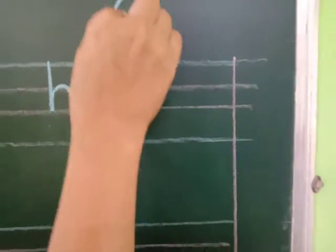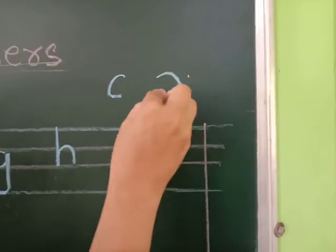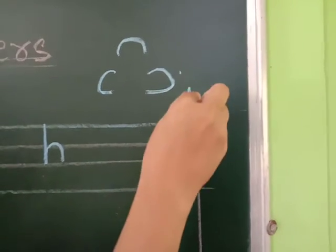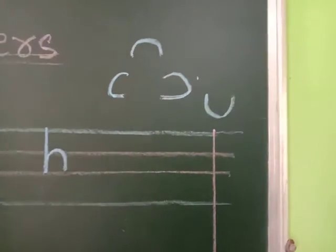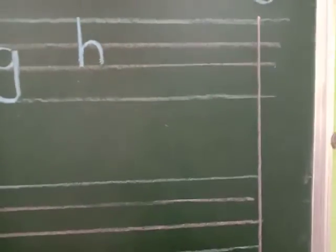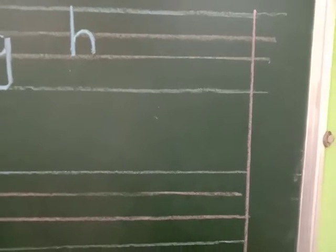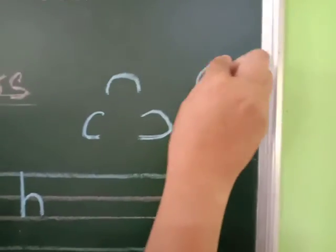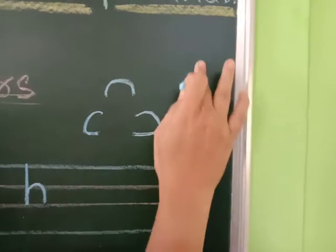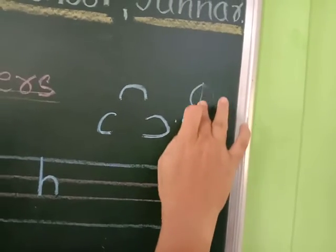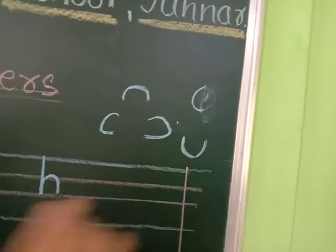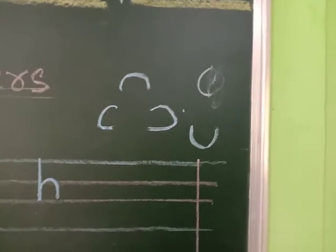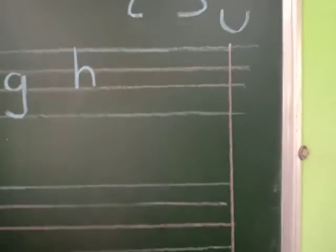The curves we can draw in different ways — this is a curve, this is also a curve, this is also a curve. So there are many ways we can draw curves — you can also call them half circles. So in both ways you can refer to them. Now we have seen small h.